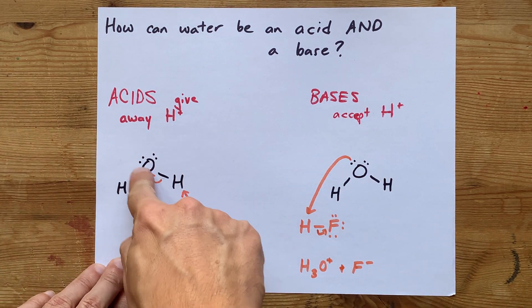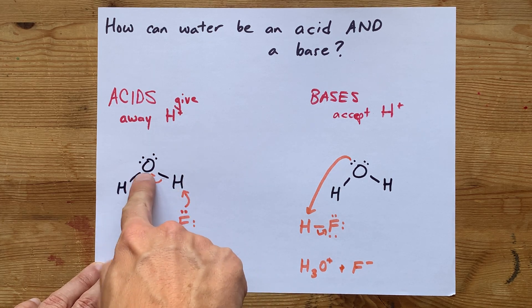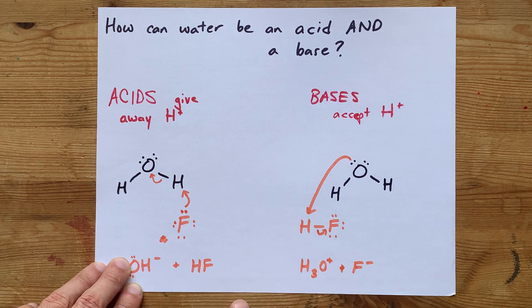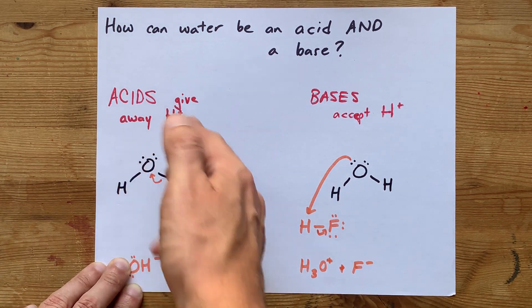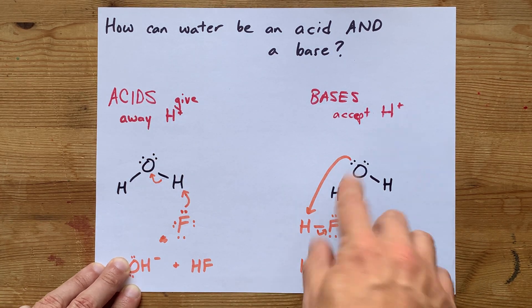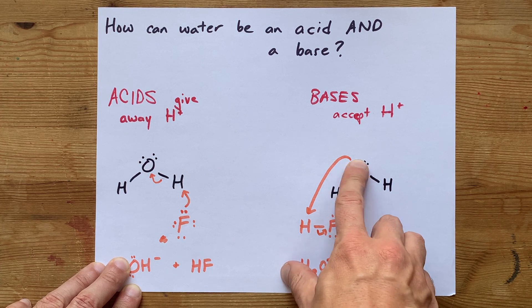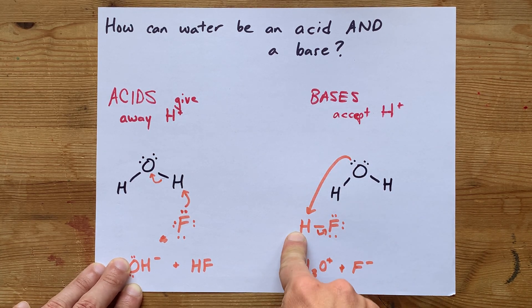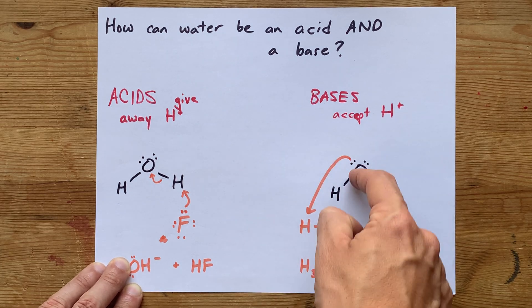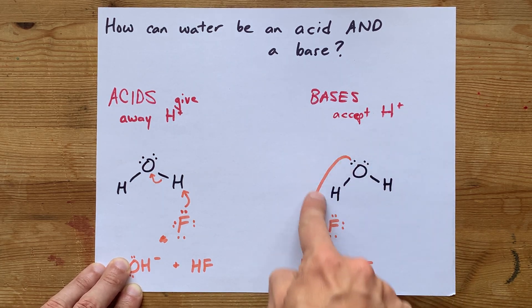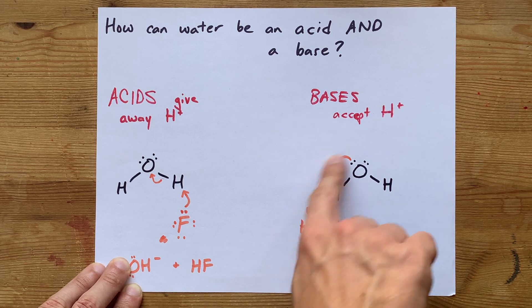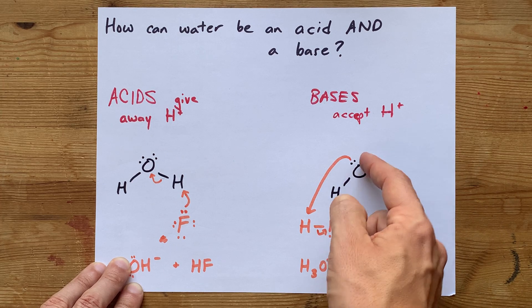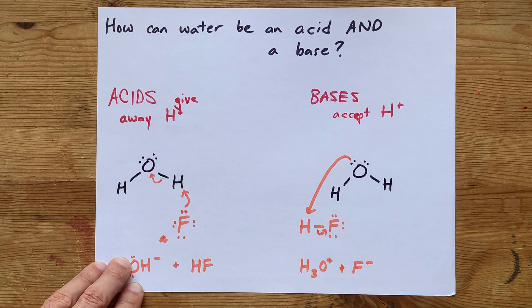The point is, because there is an H connected to oxygen in water, that H can be donated elsewhere. That makes it sometimes an acid. Because oxygen has lone pairs on it that are somewhat attractive to some other Hs, the water molecule can also act as a base, taking those Hs away from something else. The water is accepting that H onto its structure.